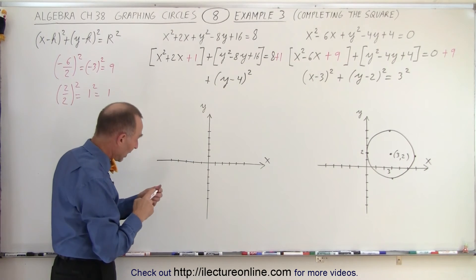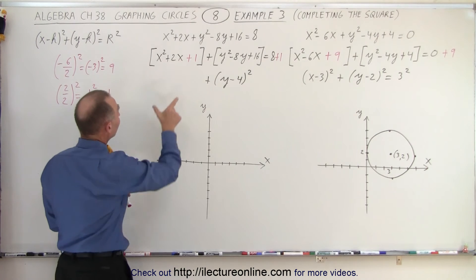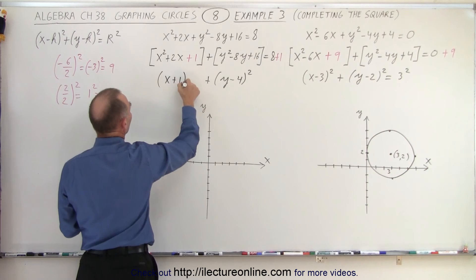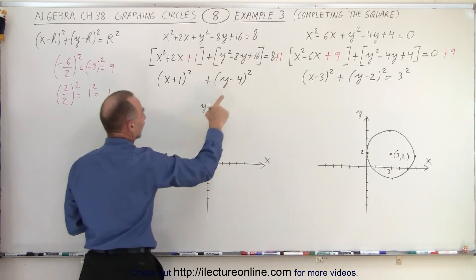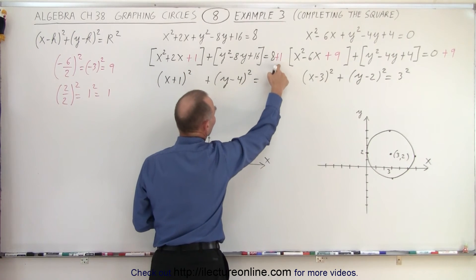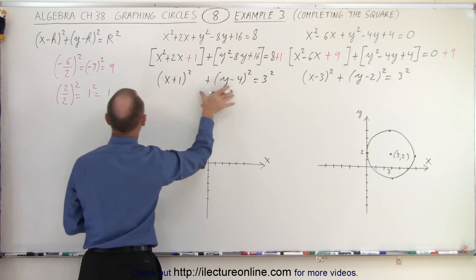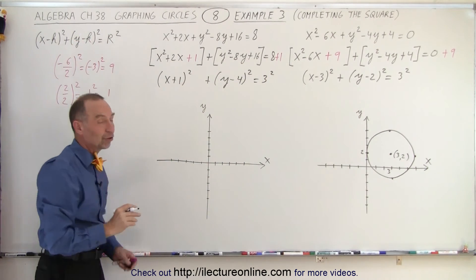Okay. Now that we have that, notice that this can be written as x plus 1 quantity squared. And here, on the right side, 8 plus 1 is 9. That can be written as 3 squared. And now, this is exactly in the same form as the general form of an equation.